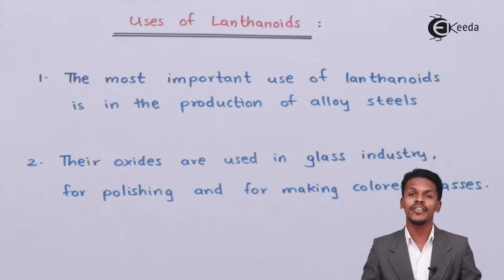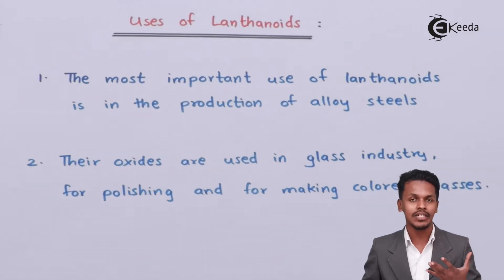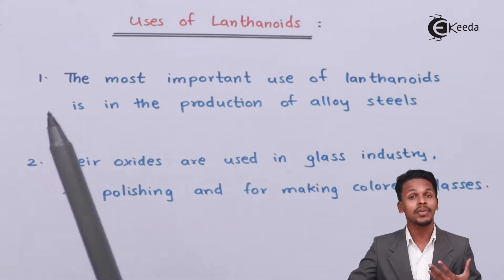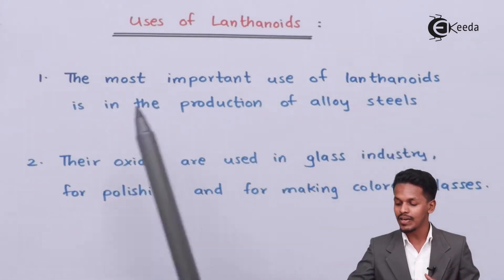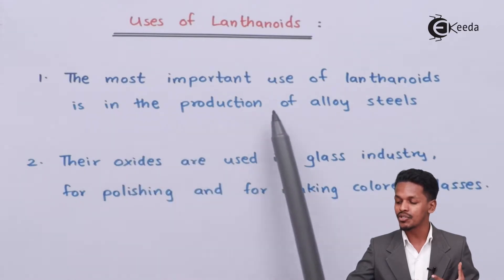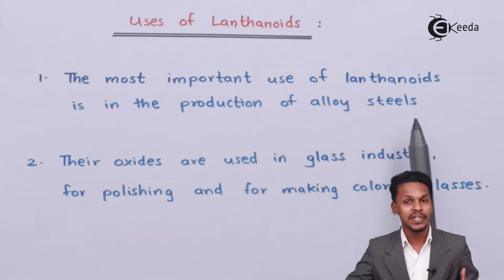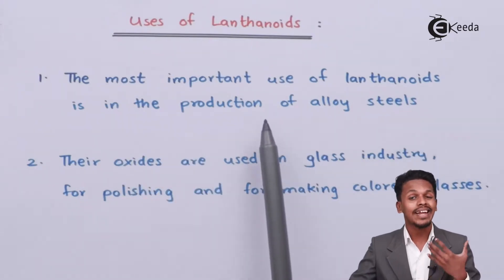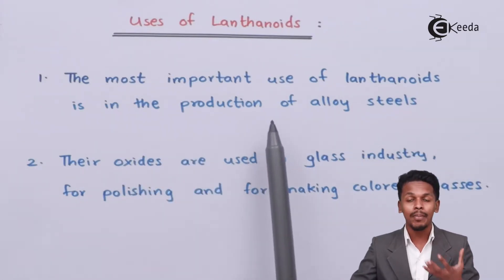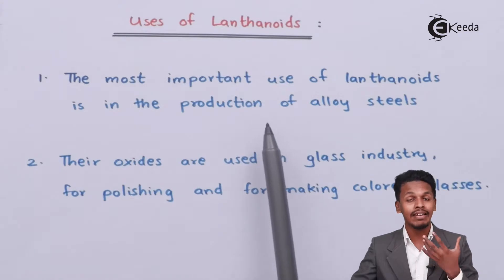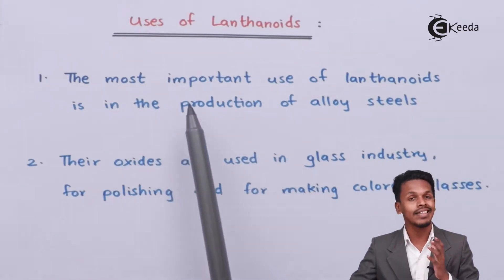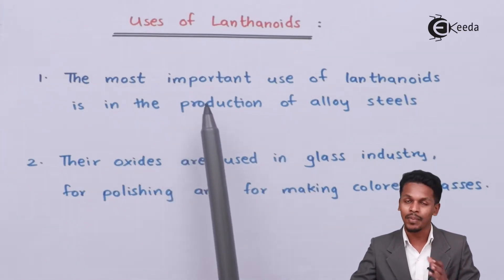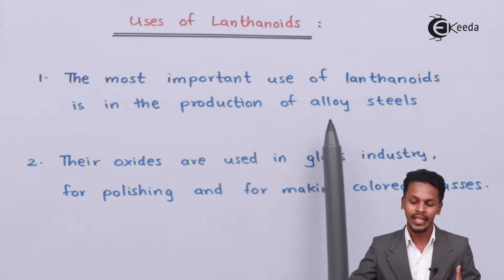In this topic we are going to talk about the uses of lanthanoids. The most important use of the lanthanoids is in the production of alloy steels, because it increases the workability as well as the strength of the steel, and that's the reason lanthanoids are basically used in the production of steel.